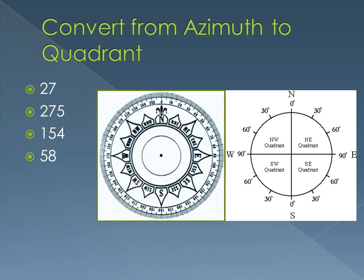What I want to do first is remind you how to convert from azimuth to quadrant and quadrant to azimuth. I'm going to go fairly quickly with this because I think most of you got it pretty well, but I do want to go over it in case someone didn't. This is our azimuth over here, and this is our quadrant compass system. Azimuth goes from 0 all the way around to 360, which is pretty intuitive for circles.